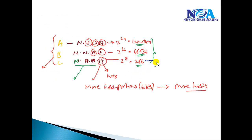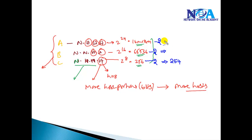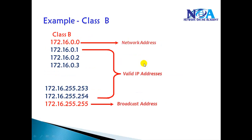Whatever addresses fall in between are valid addresses. This applies to all classes: in Class C there are 256 total addresses, so with two reserved you can connect a maximum of 254 devices. In Class B there are 65,536 addresses, meaning 65,534 usable addresses. The same rule applies for Class A — first address is the network address, last address is the broadcast address.